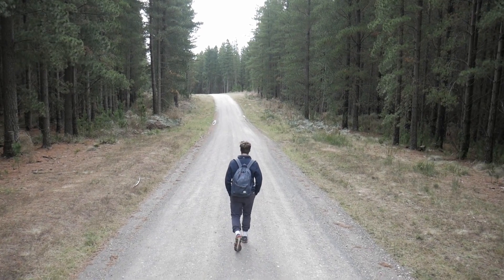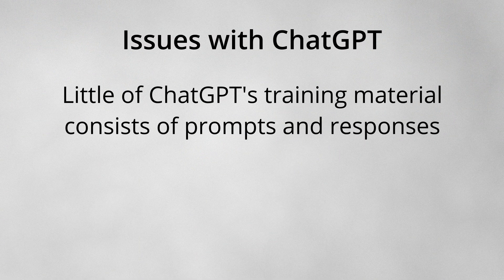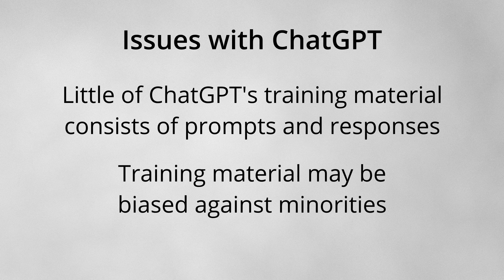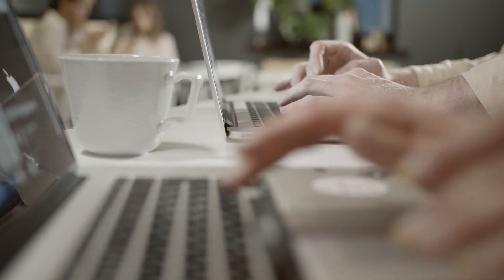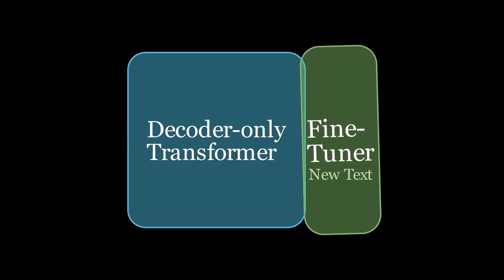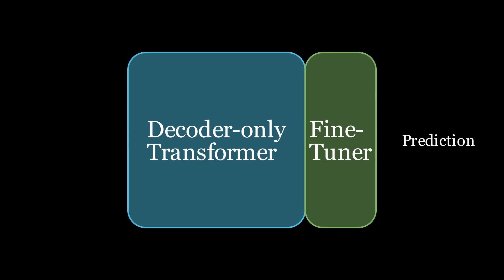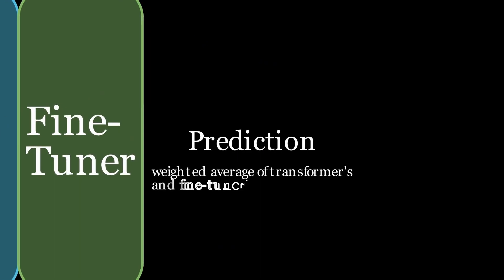What we've discussed so far is a decent starting point for ChatGPT, but there are many issues. For example, very little of ChatGPT's training material contains actual user prompts and responses. To improve further, the ChatGPT team hired contractors to generate prompts and responses. This newly written text was fed into a model with two components: the first is the same model discussed earlier, and after it processes the input, it passes the output to the second component, which fine-tunes it. Whenever ChatGPT is fed new input, its predictions are a weighted average of both components' outputs.